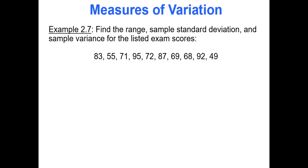Find the range, sample standard deviation, and sample variance for the listed exam scores. So I want to find the range—that's the maximum value minus the minimum value. I'll do this calculation by hand because it's really not that difficult. Maximum value minus minimum value: 95 minus 49 gives you 46. So that's my range.